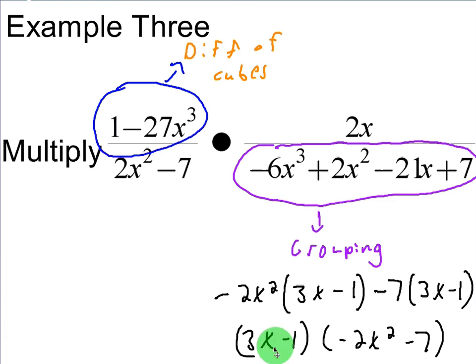That forms two factors, 3x minus 1 and negative 2x squared minus 7. And again, that is the bottom factorization. So it will be replaced by that.